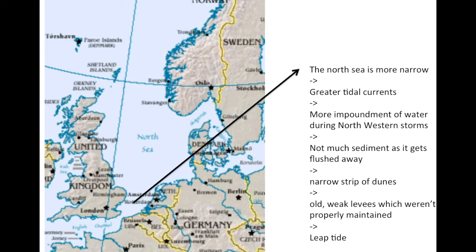So there are greater tidal currents, more impoundment of water during northwestern storms — especially if wind comes from that direction, it takes up the normal tide and pushes it even higher. Not much sediment is deposited as it gets flushed away by strong currents in the North Sea. There is only a narrow strip of dunes. And in 1953, there was an old weak levee system that wasn't properly maintained, combined with a spring tide — that's why 1953 occurred. It was a terrible disaster where a spring tide, a northwestern storm, and the general shape of the basin, combined with weak dikes, made the system collapse.